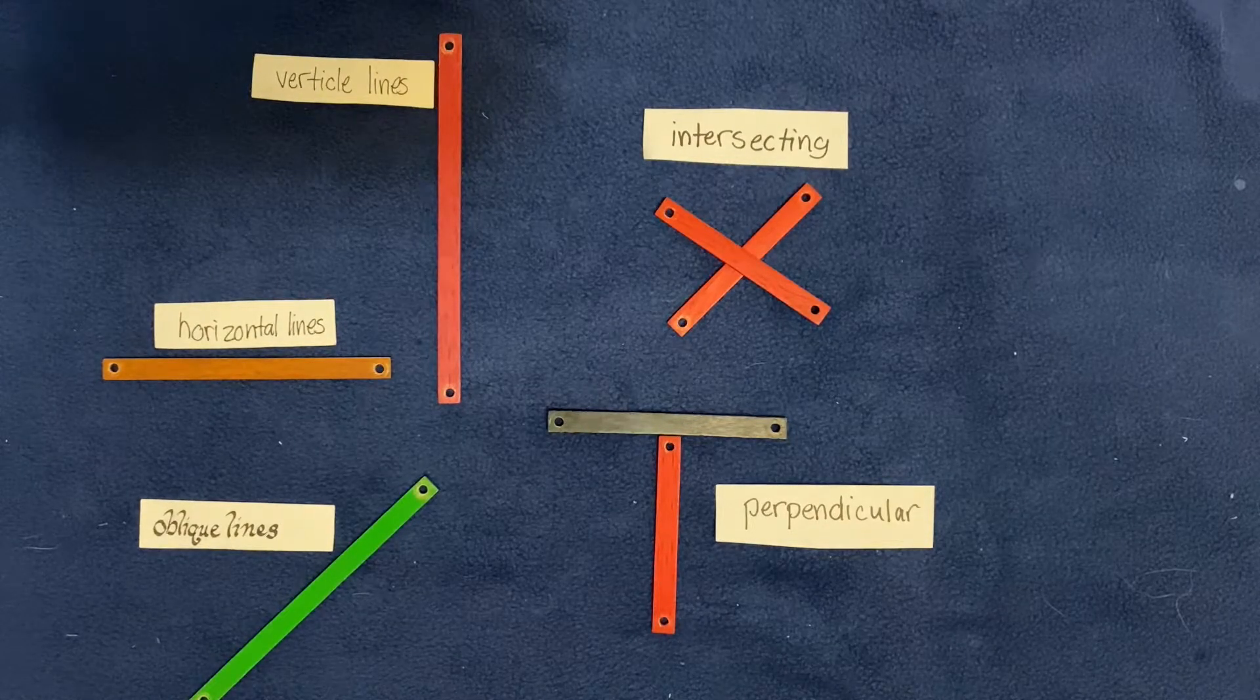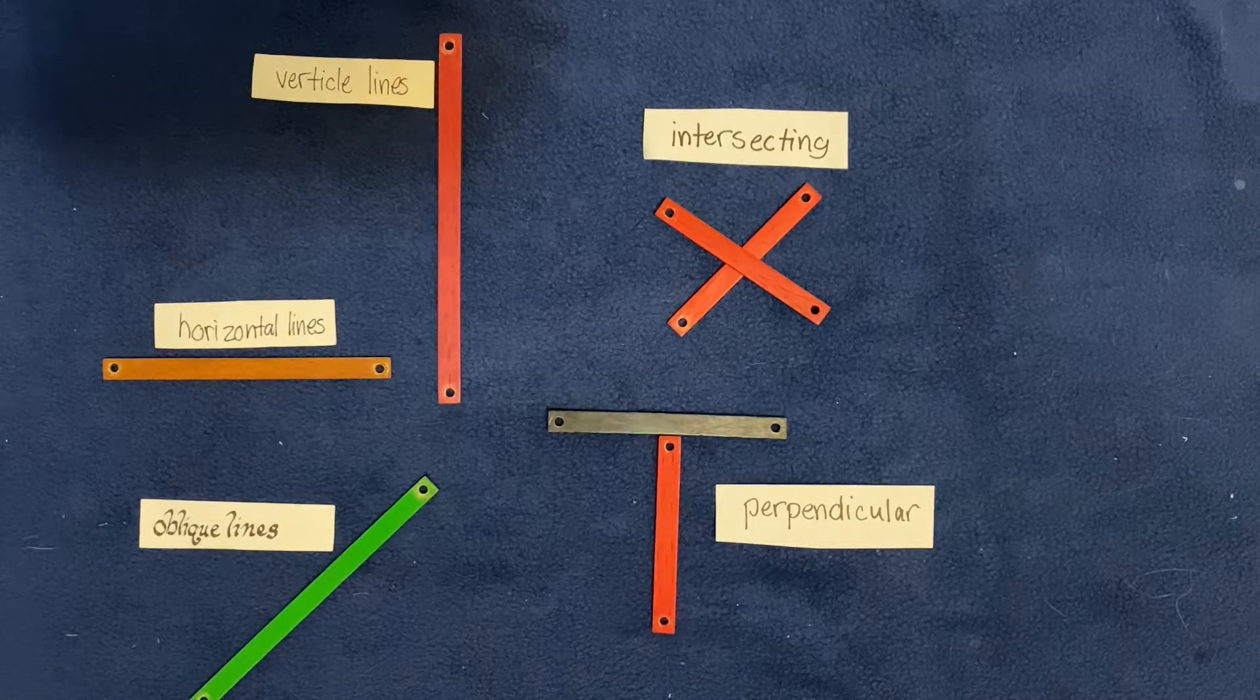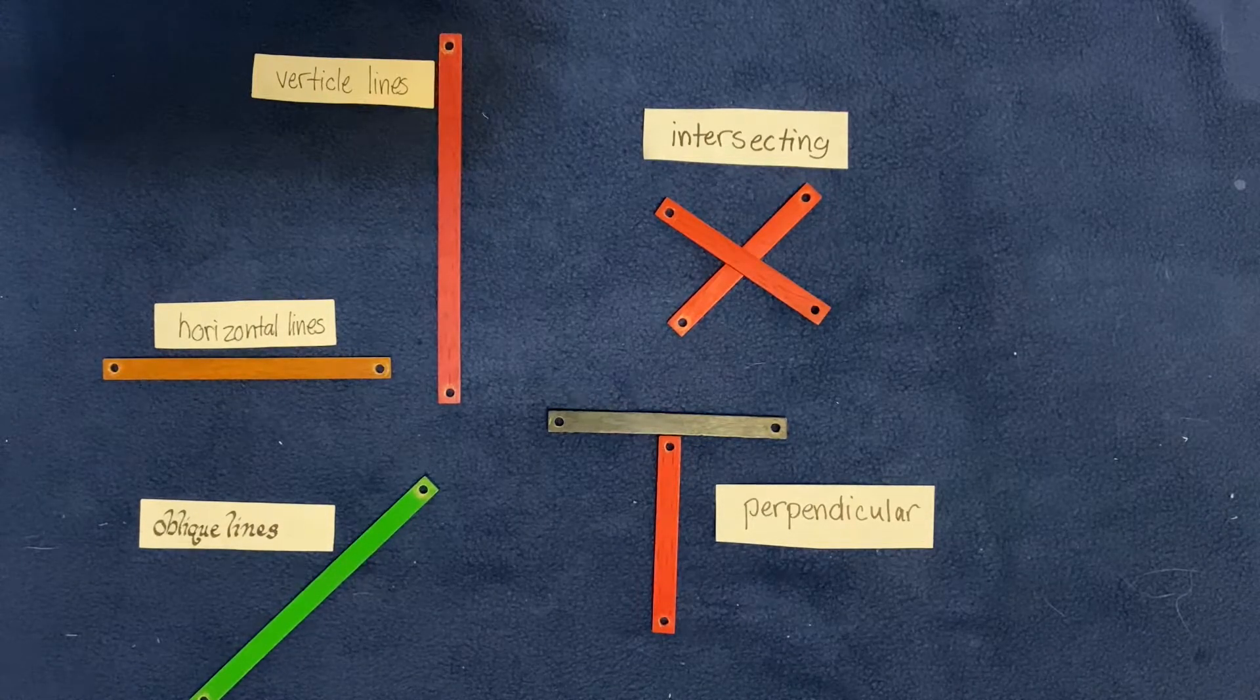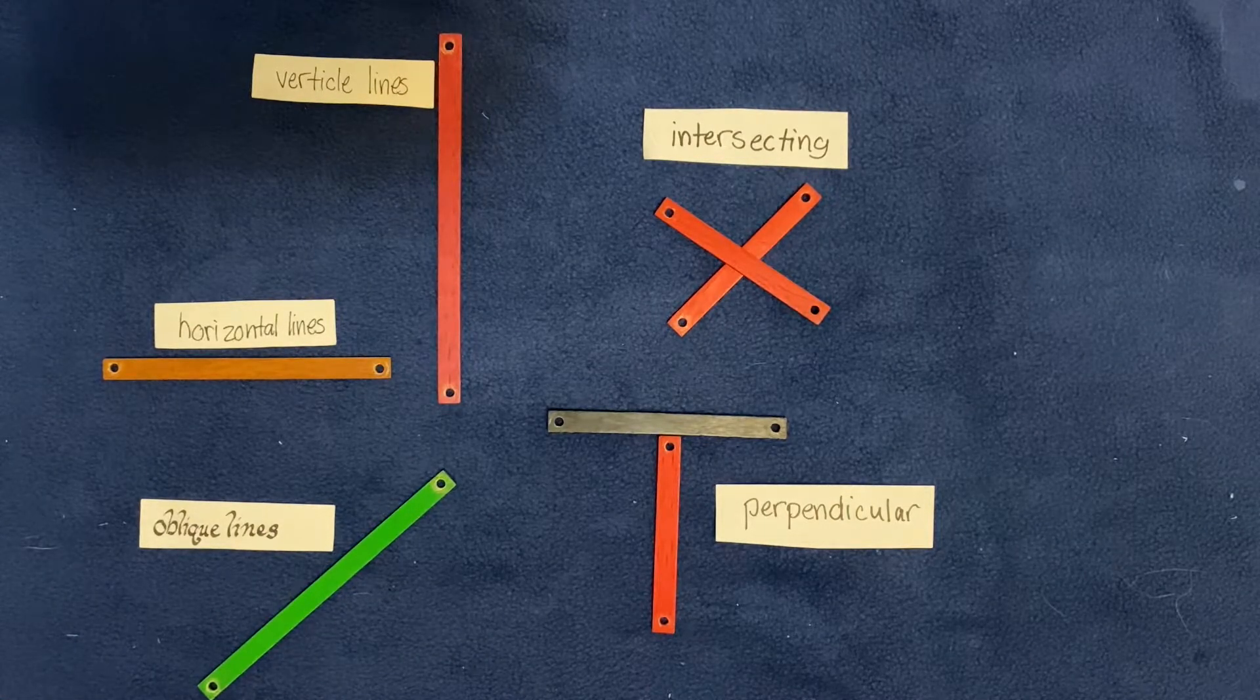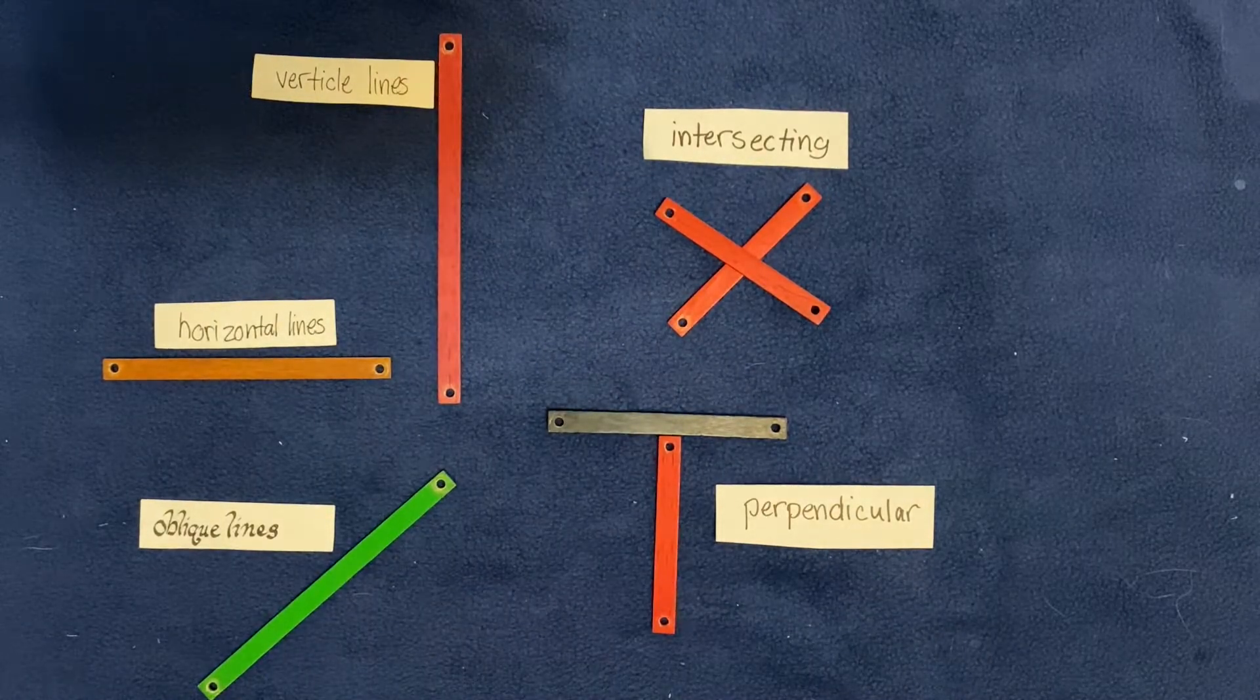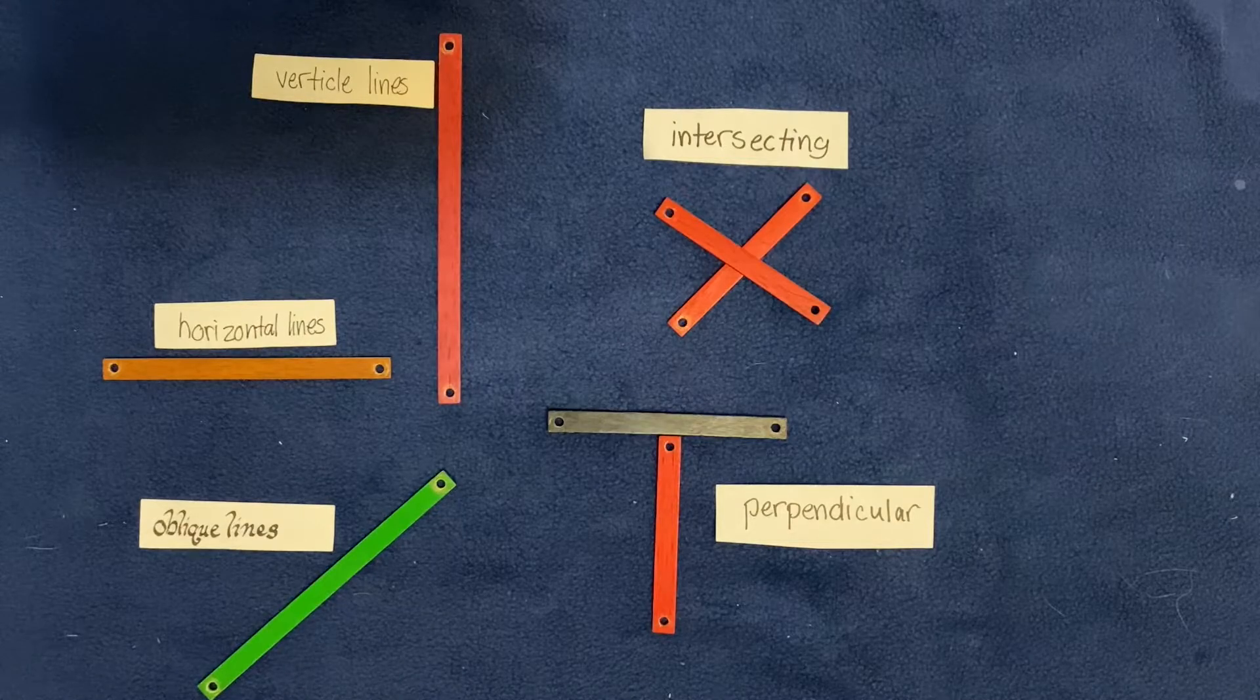Tomorrow we're going to talk about elements of art lines and we can talk more about that. But for now, these are the geometric terms for these different kinds of lines. I'm going to put some examples of possible follow-up work that you can do at the end of the video just with some pictures.